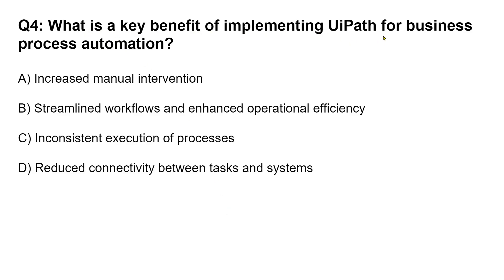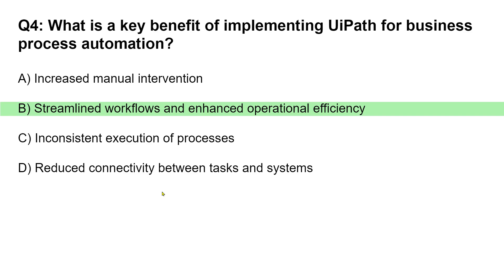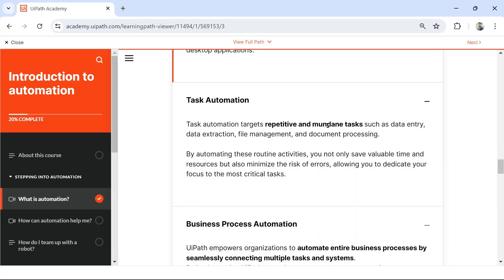Let's move on to question four: What is the key benefit of implementing UiPath for business process automation? Options are: A) Increased manual intervention. B) Streamlined workflows and enhanced operational efficiency. C) Inconsistent execution of processes. D) Reduced connectivity between tasks and systems. What do you think is the right answer for question four? Please comment. The answer is B: streamlined workflows and enhanced operational efficiency.